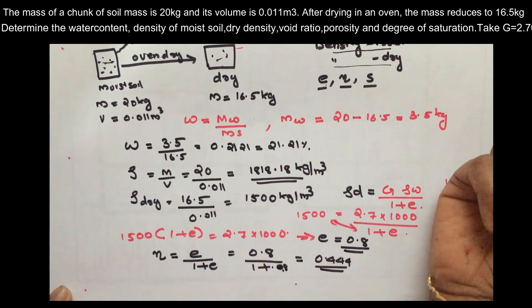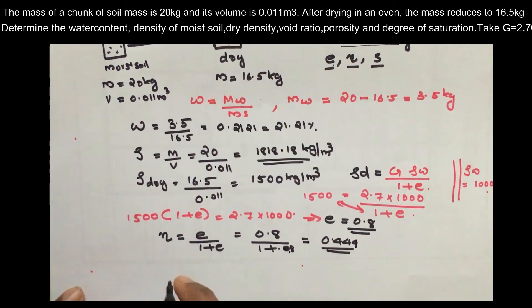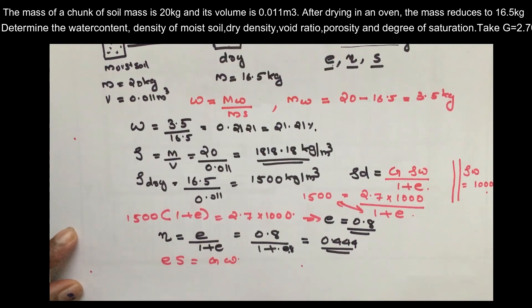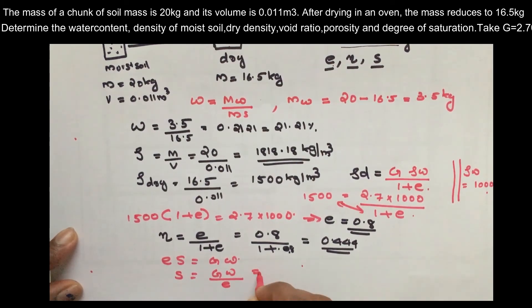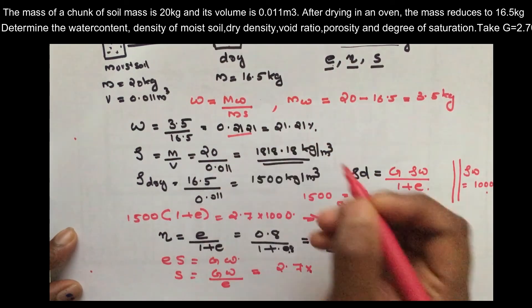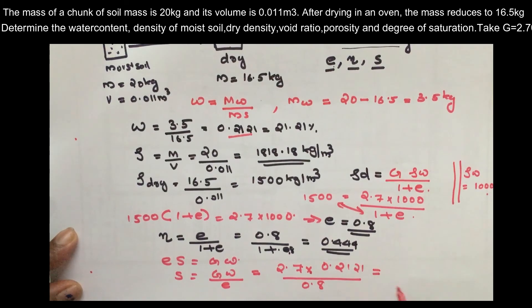For the degree of saturation S, the basic equation is e times S equals G times w. Therefore S equals G times w divided by e, which equals 2.7 times 0.2121 divided by 0.8, giving S equal to 0.7158, or 71.58%.